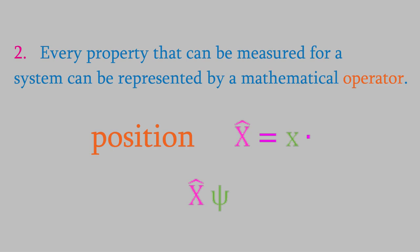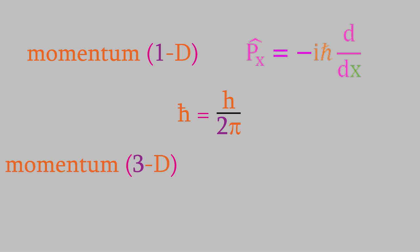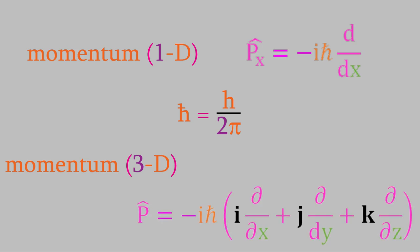Let's find out what a few more operators look like. Suppose we measure the momentum of our system along the x-axis. The operator representing that measurement has the symbol px-hat, and the operator is negative i times h-bar times the first derivative with respect to x. You might recall that the symbol h-bar is equal to Planck's constant divided by 2 pi. So, when we measure the momentum of our system, that corresponds to taking the first derivative of the wave function and multiplying the result by negative i h-bar. The operator for momentum in three dimensions is similar to the one for one dimension — it's negative i h-bar times the first derivative in each of the three dimensions, added together. Notice that we also have a unit vector before each of the three derivatives. That's because momentum has a direction, which makes it a vector quantity.